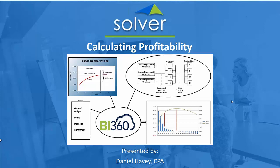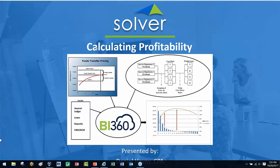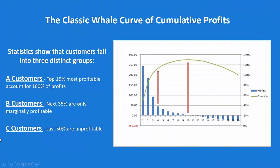Welcome, folks. This is Dan Habe from Solver. I appreciate you joining for calculating customer profitability. Let's start off with a very common graph, what's called the classic whale curve of cumulative profits. It's found in many, many different industries — banking is by no means any different.